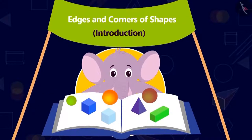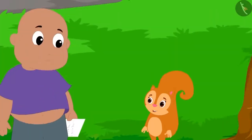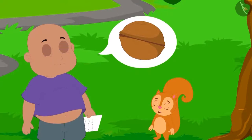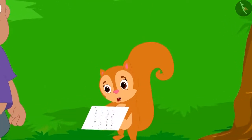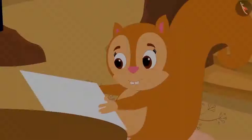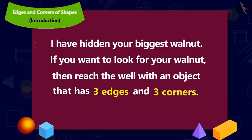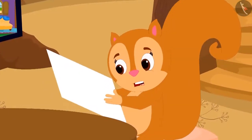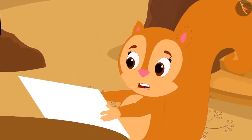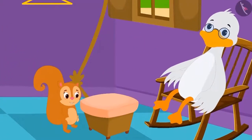Today we will understand the edges and corners of shapes. Bablu had hidden Chanda's most loved big walnut and Chanda had been given instructions in a letter to look for the walnut. Chanda read the letter: 'I have hidden your biggest walnut. If you want to find your walnut, then reach the well with any object with three edges and three corners.' Chanda had no idea about edges and corners, so she rushed to Big Mouth Uncle's house.